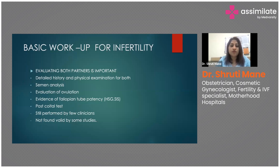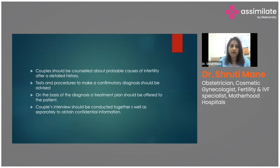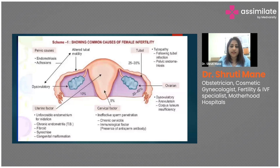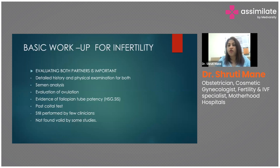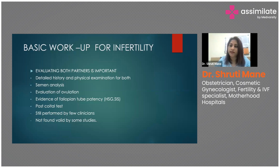The post-coital test is no longer routinely performed, as most studies have found it invalid. It was used to check cervical mucus hostility — whether the cervical mucus entraps sperm. The patient would have intercourse and report to the fertility center within 30 minutes; a cervical mucus swab would then be examined under the microscope for sperm entrapment.